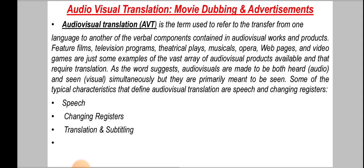As the word suggests, audio-visuals are made to be both heard and seen simultaneously, but they are primarily meant to be seen. Some typical characteristics that define audio-visual translation are speech and changing registers. With regards to speech, we refer to the ability to symbolize a previously translated natural and spontaneous dialogue. A translator should be able to transfer written language onto the screen without adding strange expressions or demanding an unreasonable, unnatural effort on the part of the character who is speaking.